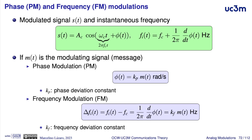In angle modulations, the information — the modulating signal — is inside the argument of a sinusoidal carrier, in the angle of this sinusoidal carrier, in the term phi(t). This term phi(t) is proportional to the modulating signal in the case of phase modulation. In frequency modulation, what is proportional to the modulating signal is not phi(t) but its derivative — equivalently, phi(t) is proportional to the integral of the modulating signal.